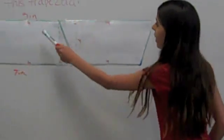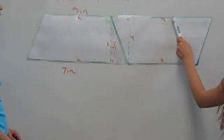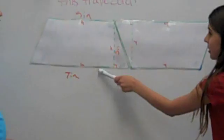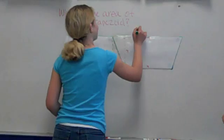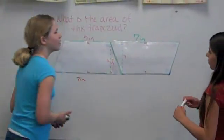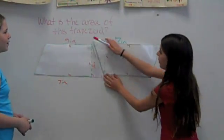We know one of the bases, which is 5 inches, but we need to know the other. Well, this base happens to be exactly the same as that base. So, what is this base? It's 7 inches.